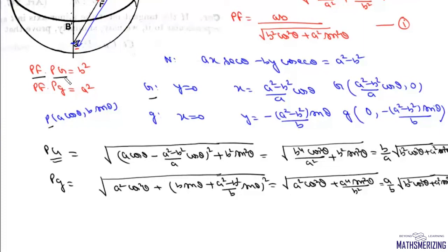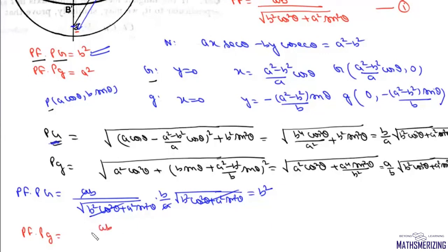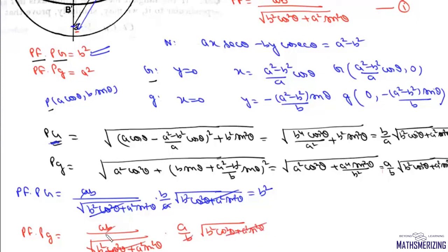Now we find PF × PG: [ab / √(b² cos²θ + a² sin²θ)] × [(b/a) √(b² cos²θ + a² sin²θ)]. The square root terms cancel and a cancels, leaving b² — so PF × PG = b². Similarly, PF × Pg = [ab / √(b² cos²θ + a² sin²θ)] × [(a/b) √(b² cos²θ + a² sin²θ)] = a². So PF × Pg = a².